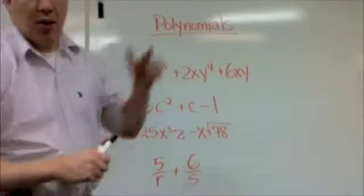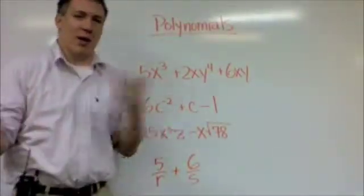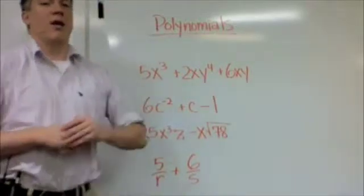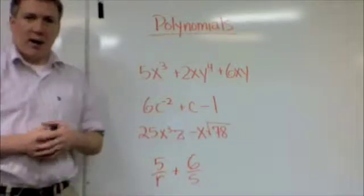Section 5-2 is about polynomials. Poly means many, and nomial means names, so many names, many terms. It's a collection of many monomials being added or subtracted together.